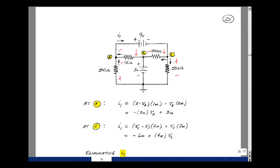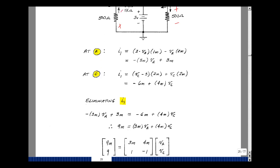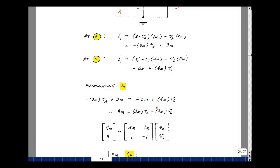I'm going to group together all the things that multiply V sub C here. And I've got 2 milli and another 2 milli, so that's 4. And I've got a minus 6 millis as a constant. Now if I just equate these two, I can get rid of the unknown I1.